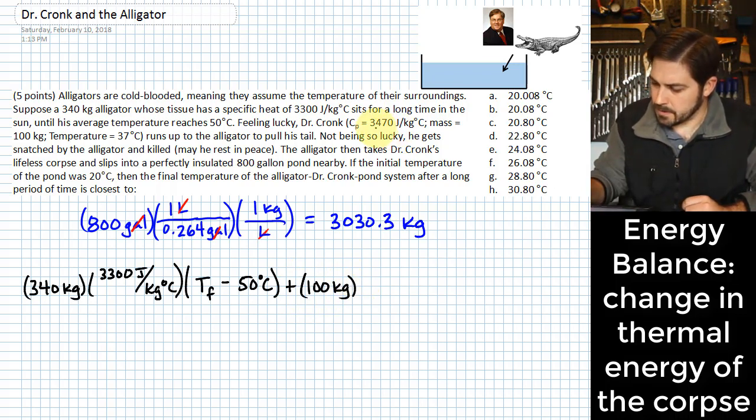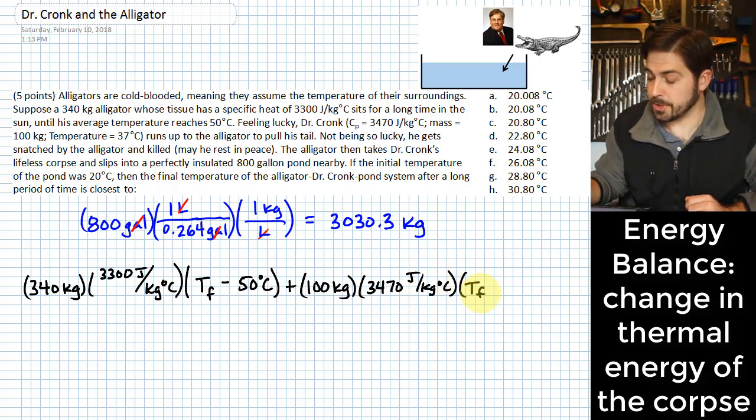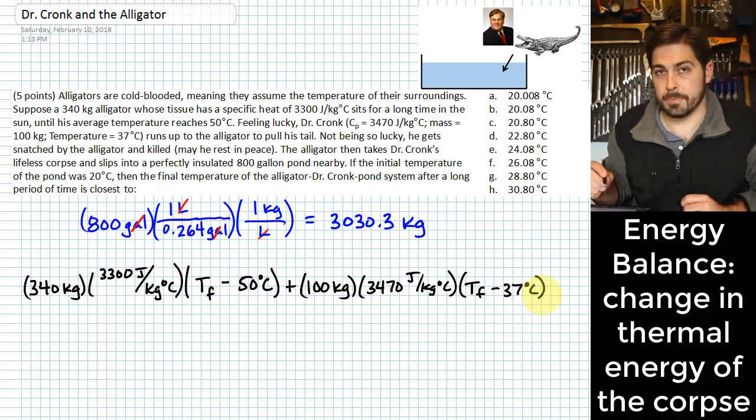His specific heat value is 3470 joules per kilogram degree C. And his change in temperature takes a similar form. You look at how much temperature he had at the end of the process and subtract what he was at the beginning, 37 degrees C. And that term there gives you how much change in energy has happened in Dr. Kronk. May he rest in peace.